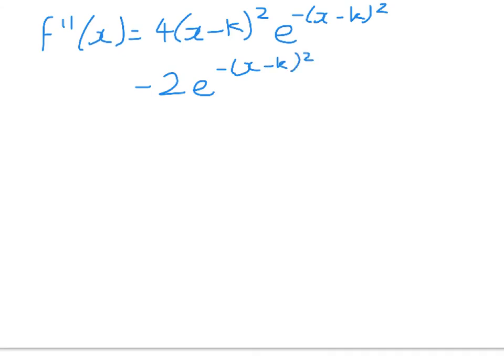So where did we get to? Well, we've got f''(x) is equal to, collecting up like terms, we've got 4(x - k)^2 times e^(-(x-k)^2) minus 2e^(-(x-k)^2). And we're trying to figure out where is that going to equal 0, if you just go back to the question. Now, that looks awful, but it's actually not. We're just going to take out a common factor.